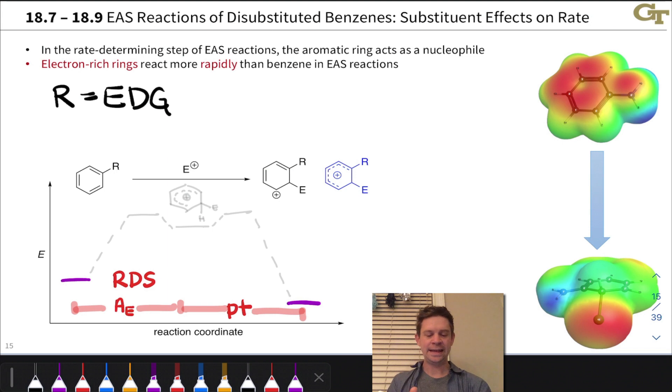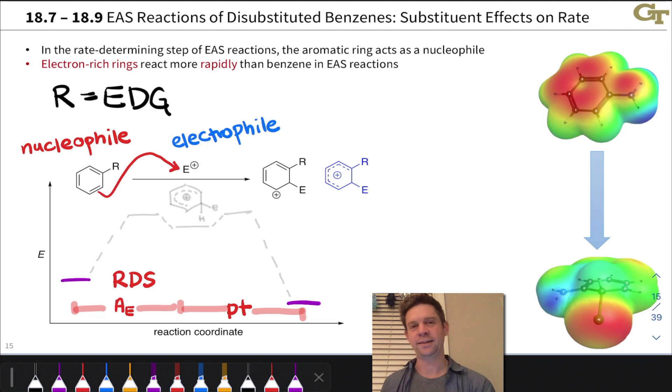In that first step, E+ is pretty obviously the electrophile, and the aromatic ring acts as a nucleophile in this A sub E step. In terms of electron flow, it's something like this: pi electrons head to E+, and this is how we arrive at these products on the right-hand side.